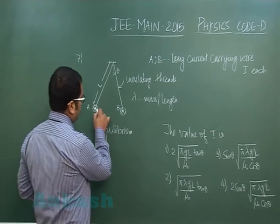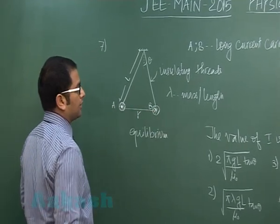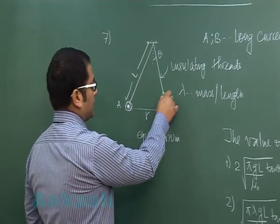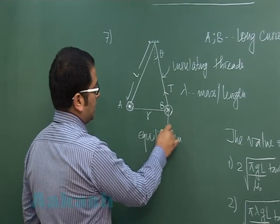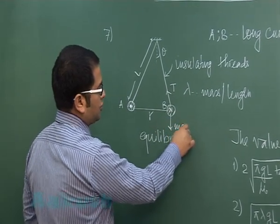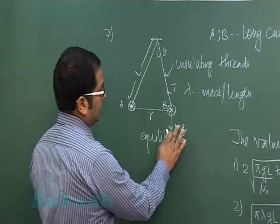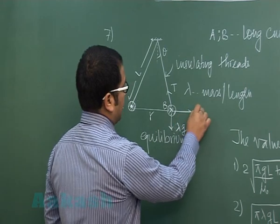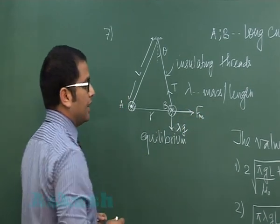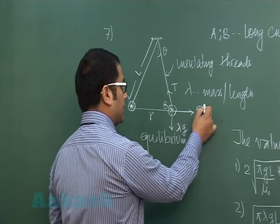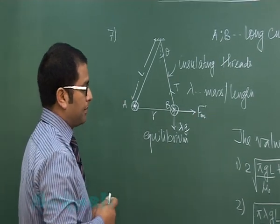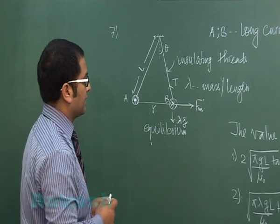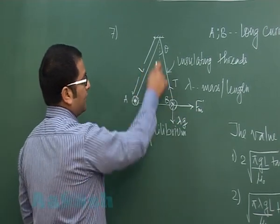So if I take this distance to be R where R can be easily put to be 2L sin theta this would be T this would be Mg or better if I consider for a unit length so that would be lambda times G and this is the magnetic force of repulsion of course per unit length so let me denote it by FM prime representing magnetic force of repulsion per unit length.